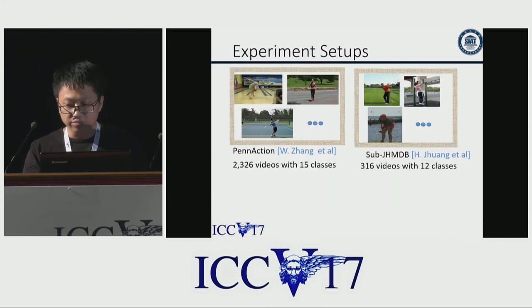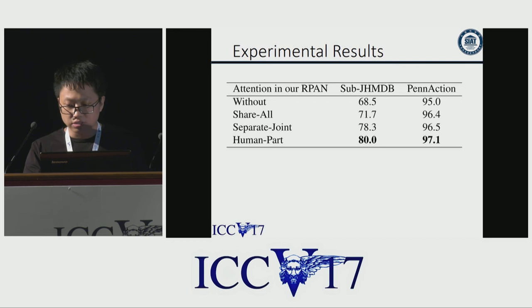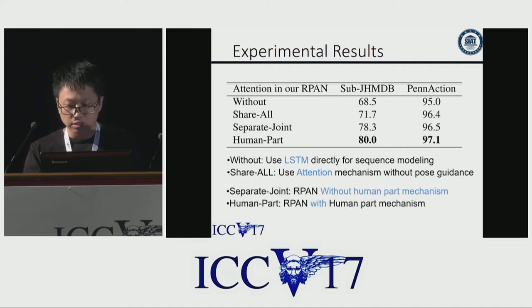We evaluate our method on two popular benchmarks in pose-related action recognition: sub-JHMDB and Penn Action. The evaluation protocol is classification accuracy. Note that joint information is only required during training and is not required for testing. To investigate the properties of our network, we compare results with baseline methods: directly using LSTM for sequence modeling, using attention without pose guidance, and using separate joint features instead of human parts. The results validate the effectiveness of our human part design.